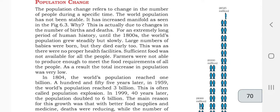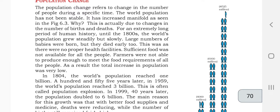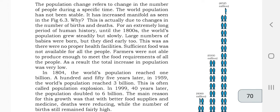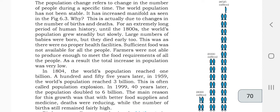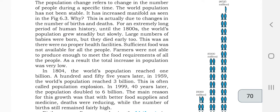Sufficient food was not available for the people. Farmers were not able to produce enough to meet the food requirements of all the people. As a result, the total increase in population was very low. Both old and young people were dying out of starvation because of insufficient water and poor quality food. In that way, population increase was very slow.